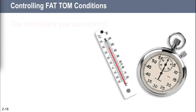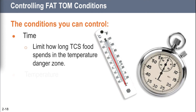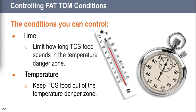You can't control how much water is in food, you can't control the acidity level of your chicken, and you can't control the available oxygen. All you can control is time — how long that TCS food spends in the temperature danger zone — and temperature, by keeping foods refrigerated until cooking. The only way to stop or slow bacterial contamination of food is to control the FAT TOM conditions of time and temperature.